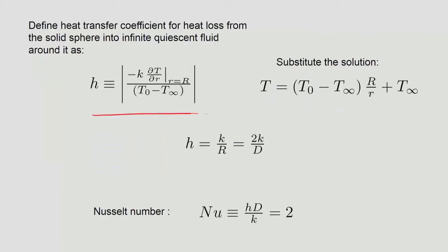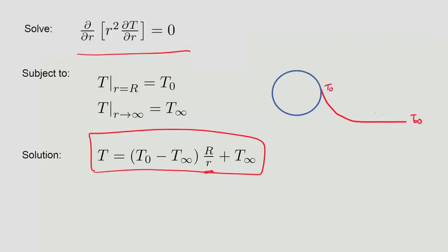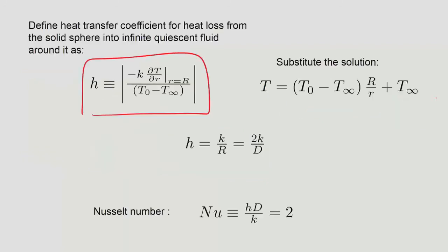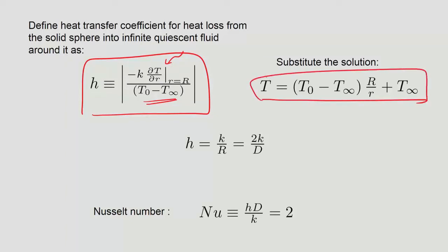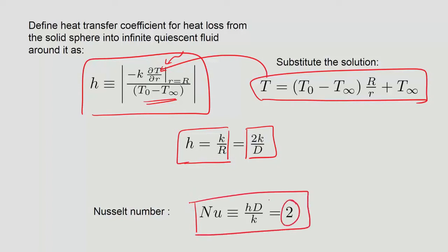The heat transfer coefficient is defined as the conductive flux at the sphere surface divided by (T₀ − T_∞). Substituting the solution gives h equals K/R, so h equals 2K/D. The Nusselt number Nu equals hD/K equals 2. This simple result holds for a sphere in a quiescent fluid — pure conduction — and is a remarkable closed-form result.